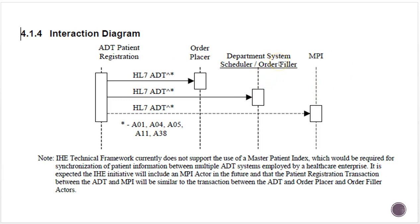In some places, depending on the workflow, the order filler may be the RIS system, so the order placer and order filler could be in the HIS and the MPI could be in the RIS. Another important aspect of IHE is it designates only five possible ADT messages that you can use: A01, A04, A05, A11, and A38. These are the only messages it wants to see coming out of ADT for this purpose.